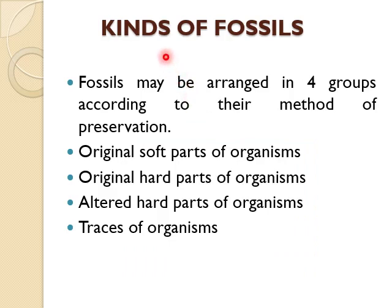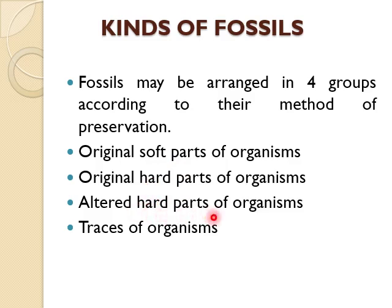Now we are going towards the kinds of fossils. Fossils may be arranged into four different groups based on the methods of preservation. Number one is original soft parts of organisms. Number two is original hard parts of organisms. Number three is altered hard parts of organisms. And number four is traces of organisms.